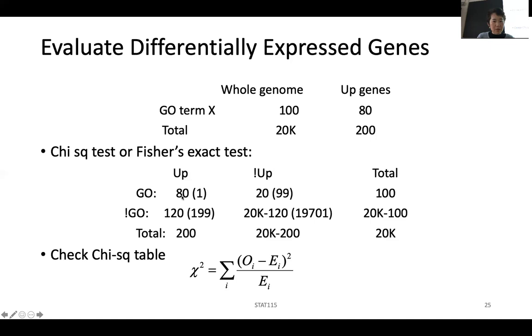This is the observed. The numbers in these four here, that's observed, subtracted by the expected, which is in the parentheses. And you take the square divided by the expected and you can check the chi-square table that will tell you the p-value. But you can probably guess that this is a ridiculously significant p-value.